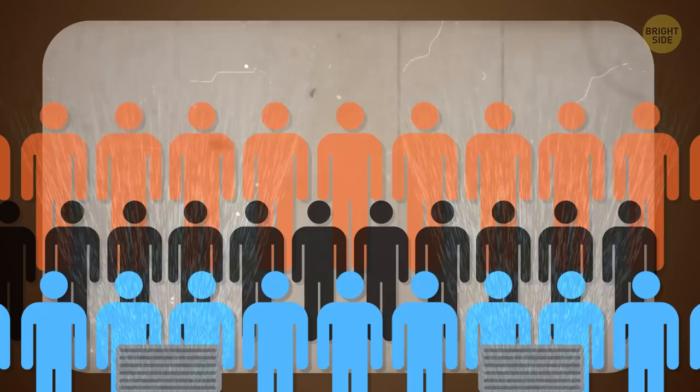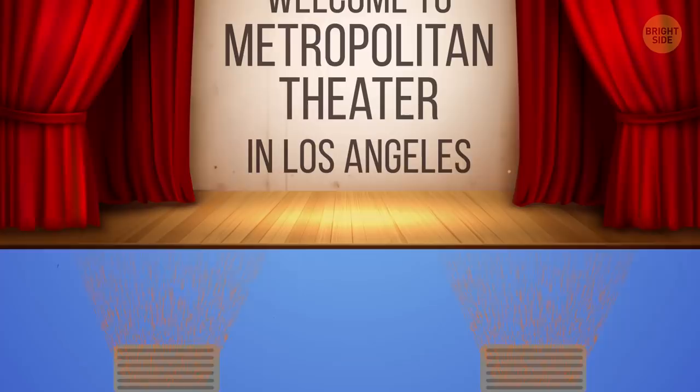It required a few adjustments, but in the end they fixed the issue, and Metropolitan Theater in Los Angeles got the first perfect public air conditioning system.